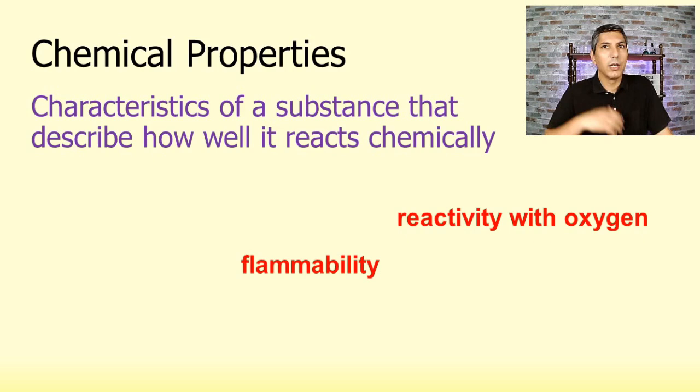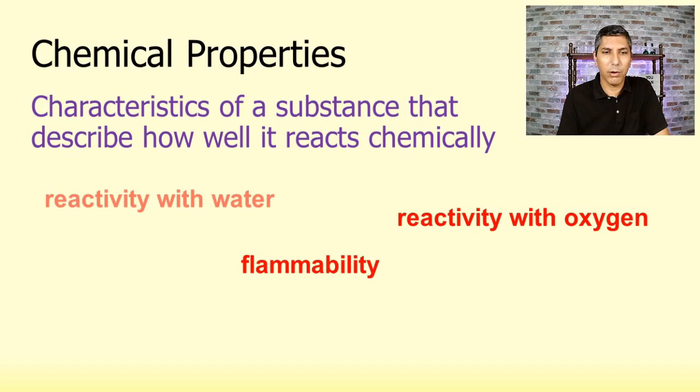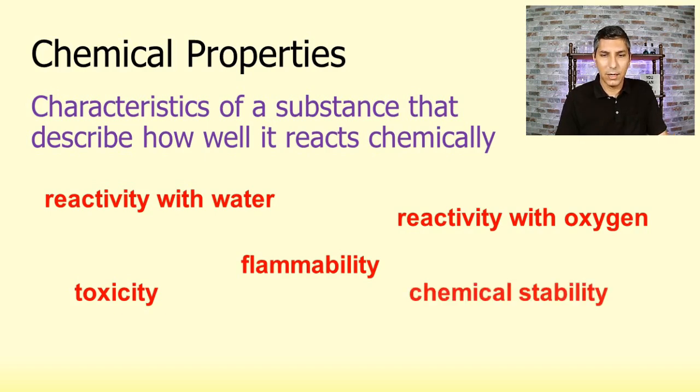Reactivity with oxygen. There are certain substances that react with oxygen very quickly, very slowly. This is a chemical property. How well something reacts with water. You've heard of toxicity. If something is toxic or non-toxic, that is how something reacts with a human or a living organism. And so that's toxicity. Or chemical stability. There are some things that are very stable. They don't react very much. Once again, this describes how well something reacts or in some cases does not react. So we should be able to take some properties and classify them into either being physical or chemical. Make sure that you can do that.